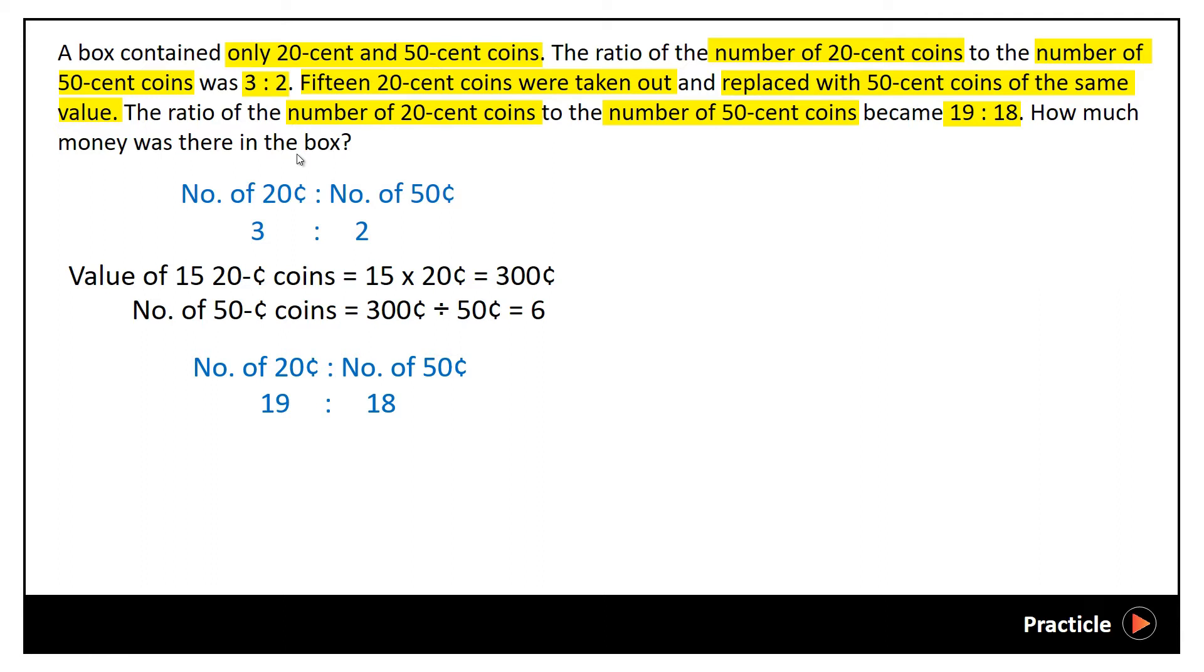So in order to find out the amount of money that was in the box, we will first need to find the number of 20-cent coins and the number of 50-cent coins in the box. So how do we go about doing that? We make use of what we know. What do we know? We know that we have 3 units of 20-cent coins in the beginning. And then we take out 15 of them.